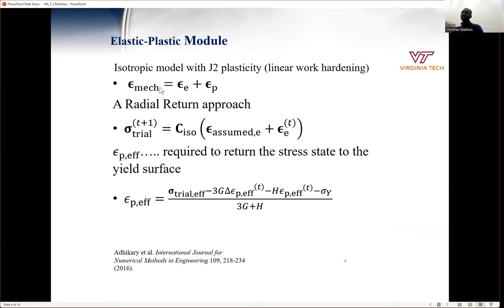For the isotropic part, we use the mechanical strain, which is equal to the sum of elastic strain and plastic strain. We also use the radial return approach to calculate our trial stress, and also use the effective plastic strain, which is required to return the stress to the yield surface.